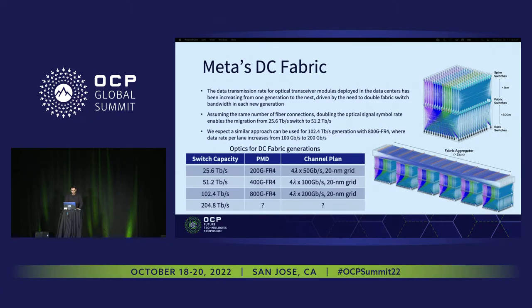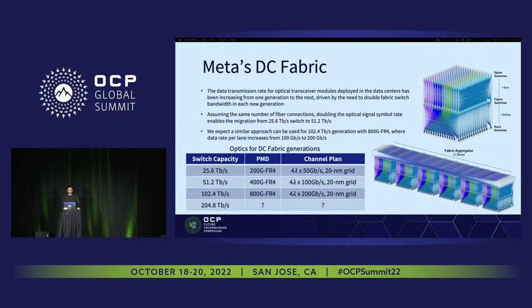The table on the left side shows different generations of our DC fabric. Our current generation is based on a 25.6T switch using 200G FR4 PMDs with 4 lambda and 50 gigabit per second PAM4 modulation. As we move to the next generation we plan to use 400G FR4 in a 51T switch where the data rate is doubled. We expect that as we move to 100T, the same approach of doubling the data rate is still feasible with 800G FR4 PMDs, but it's still unclear what we can use for the 200T generation switch — and that's the main topic of this presentation.